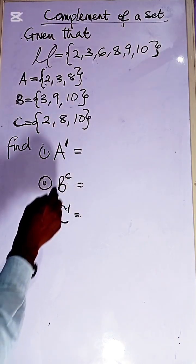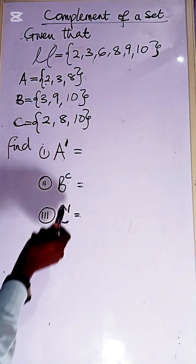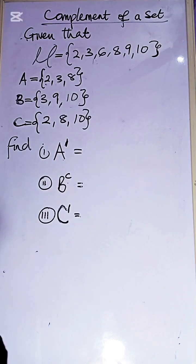Now the complement of a set can be denoted in this form. This is prime or you call it complement. So A prime or A complement is the same thing.